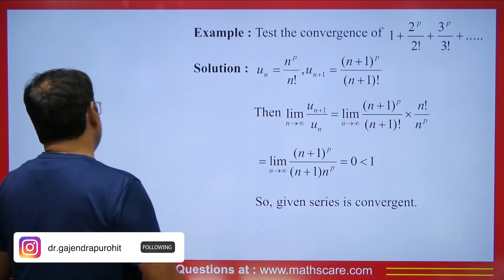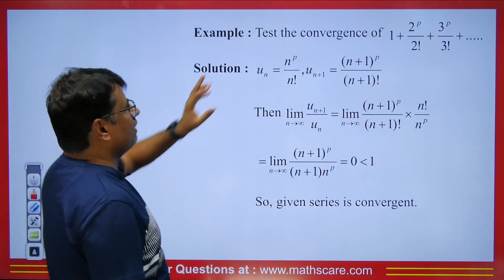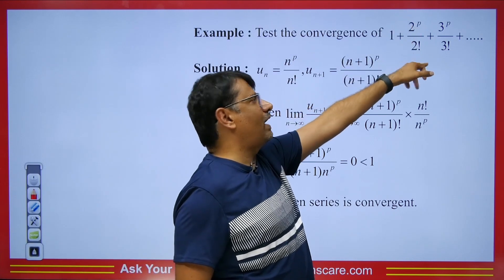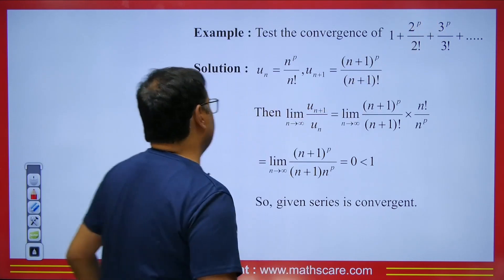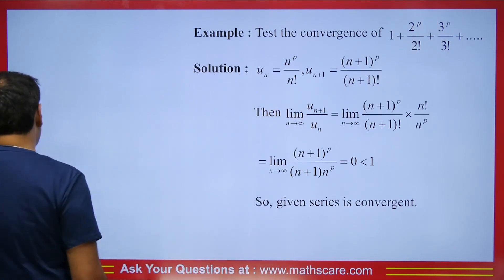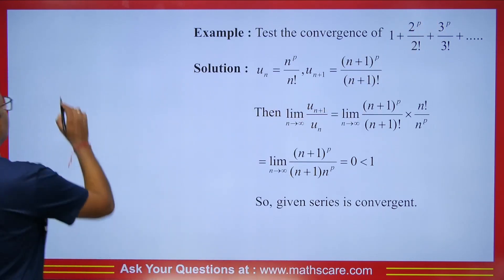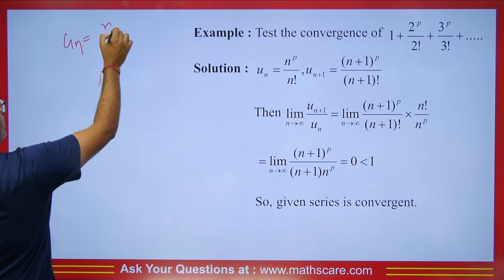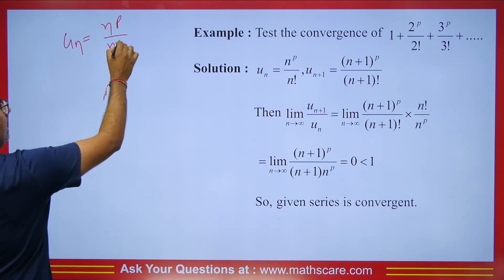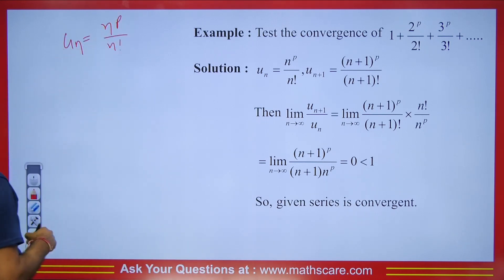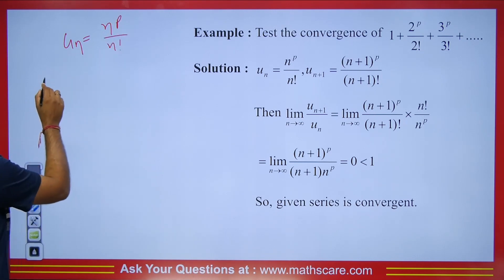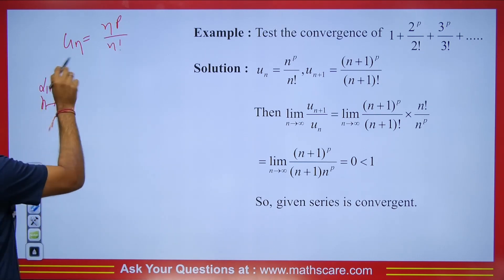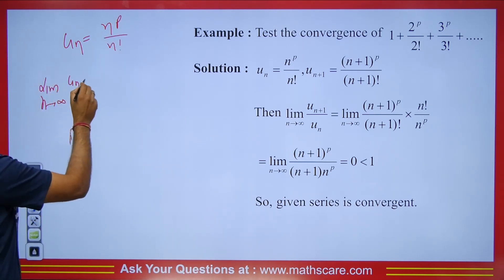Let's take an example. We have the series 1 + 2^p/2! + 3^p/3! and so on. The nth term will be n^p upon n factorial. The formula we have is limit n tends to infinity — see the factorial, which means this test will be applicable. We will compute u_{n+1} upon u_n.